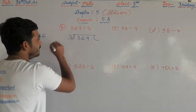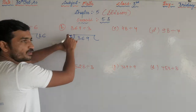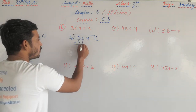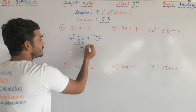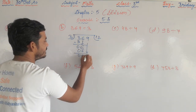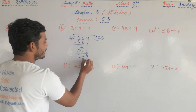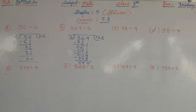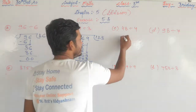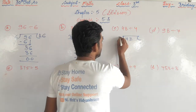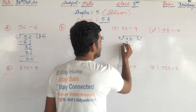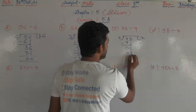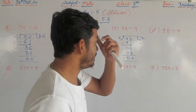Next, 369 divided by 3. First digit 3 equals the divisor. Three ones are 3, subtract: remainder 0. Bring down 6: three twos are 6, remainder 0. Bring down 9: three threes are 9, subtract: remainder 0. The quotient is 123. Now 48 divided by 4: four ones are 4, subtract: remainder 0. Bring down 8: four twos are 8, remainder 0. The quotient is 12.